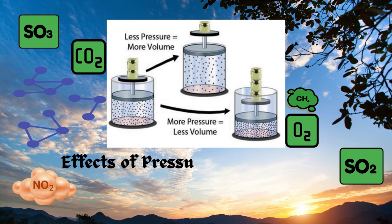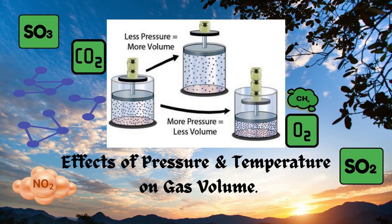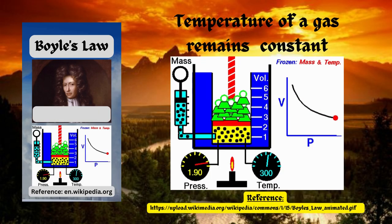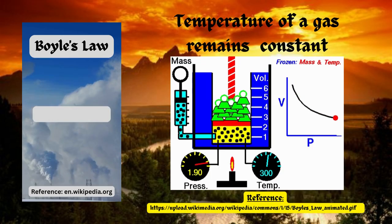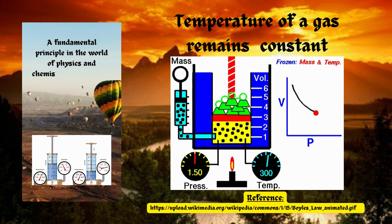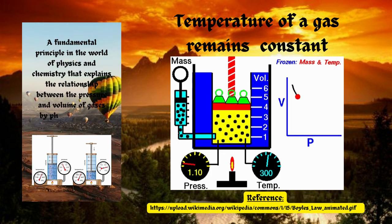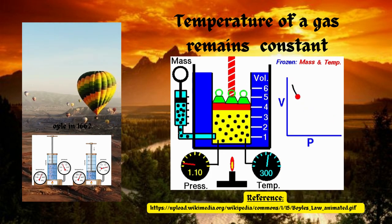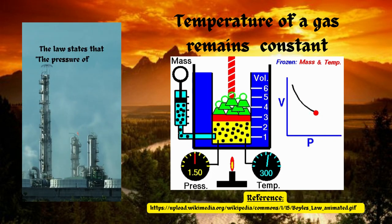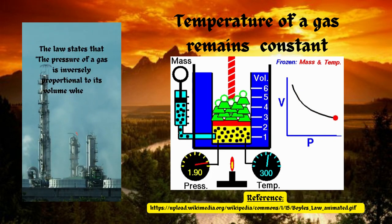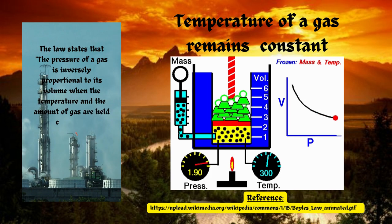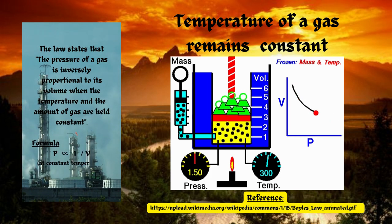Effects of pressure and temperature on gas volume. In Boyle's law, temperature of a gas remains constant. Boyle's law, a fundamental principle in the world of physics and chemistry, explains the relationship between the pressure and volume of gases by physicist Robert Boyle in 1662. The pressure of a gas is inversely proportional to its volume when the temperature and the amount of gas are held constant.